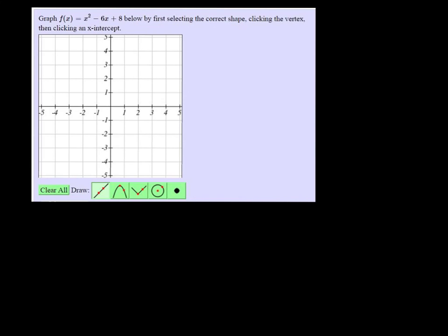All right, we want to graph x squared minus 6x plus 8. Since it's an x squared, it's a quadratic function, I know that it's a parabola.